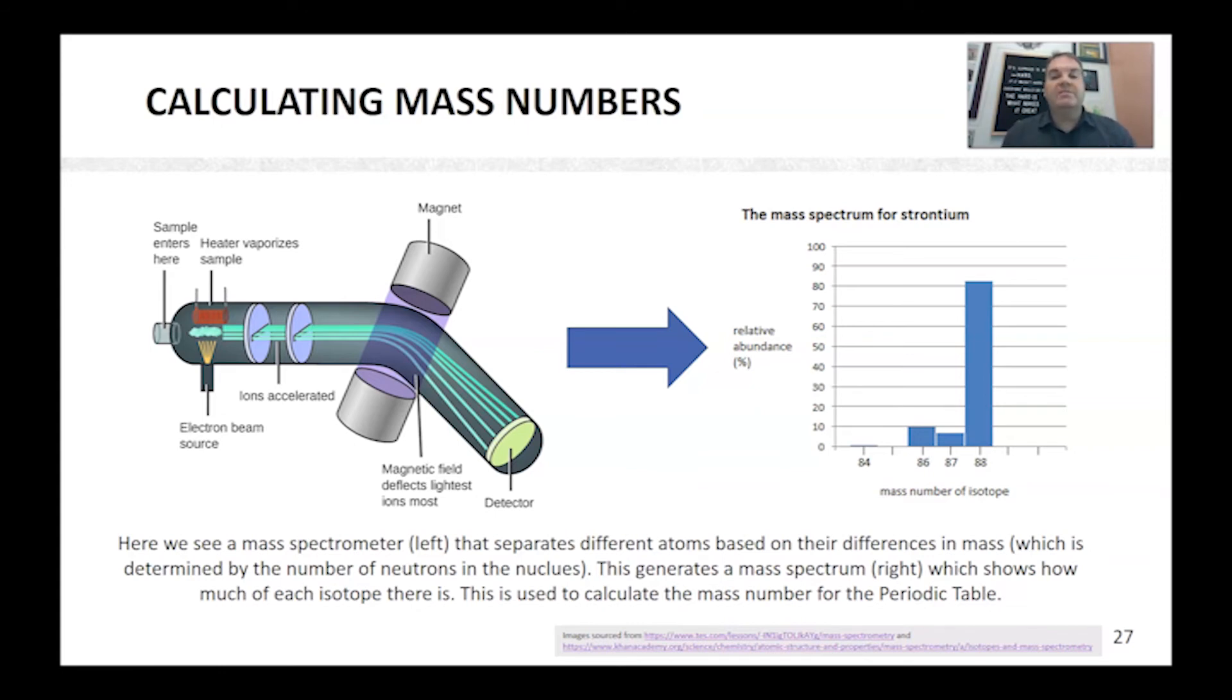And they separate different atoms based on the differences in mass. So what they do is you pass your sample here through an electron beam. And then you have a magnet here. And what that will do is that creates a magnetic field, which will cause the atoms to deflect based upon how heavy they are. So the lightest atoms will bend the most. And so then you get a detector here. And so as you're looking at this, they will strike the detector at different times. And so it will allow you to work out how much you have of each element.